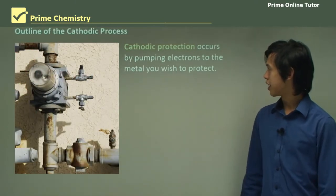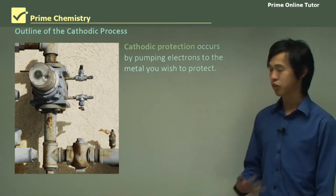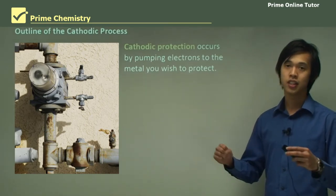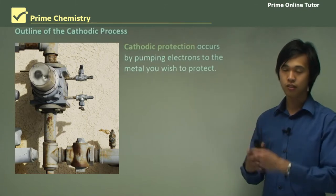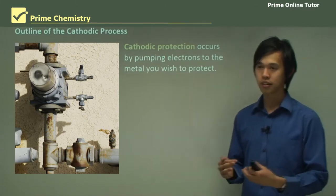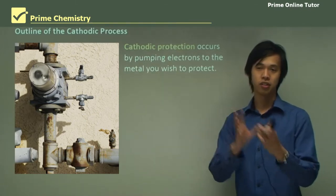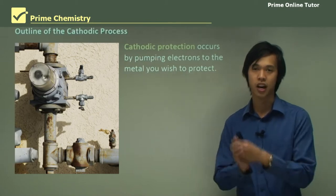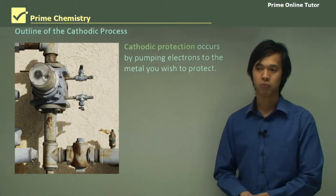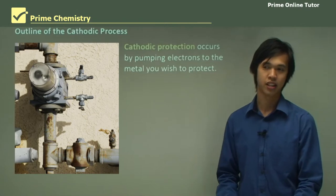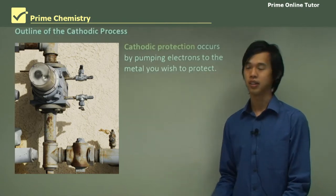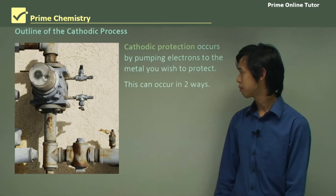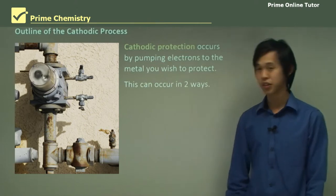Cathodic protection occurs by pumping electrons to the metal you want to protect. We have to take electrons from somewhere and pump them onto the metal we actually want to protect — so the hull of the ship, or a pylon in the ocean. We need to put electrons onto that metal.